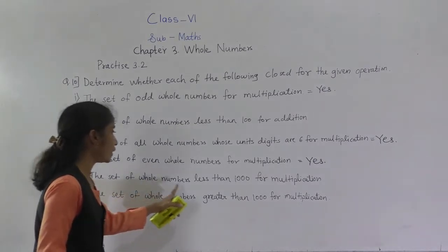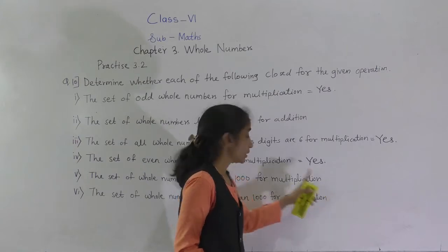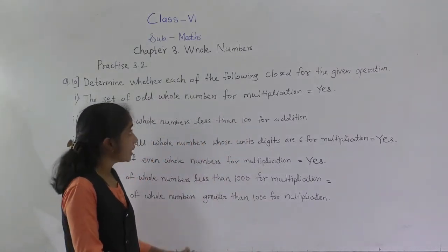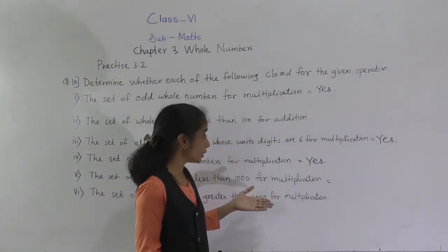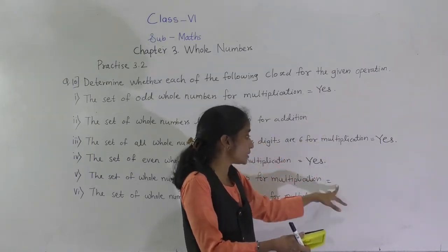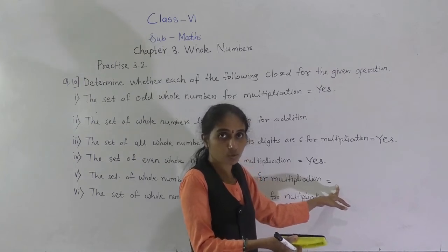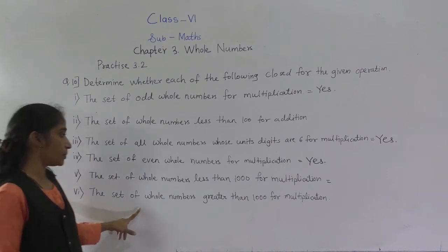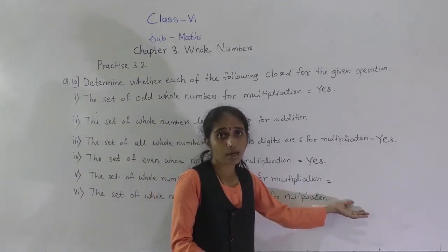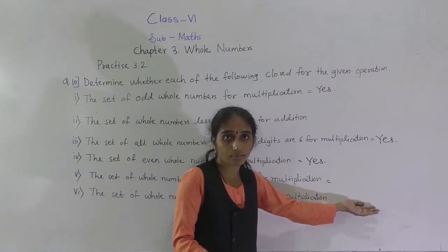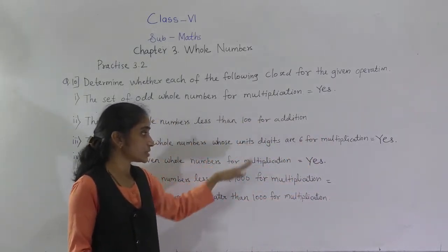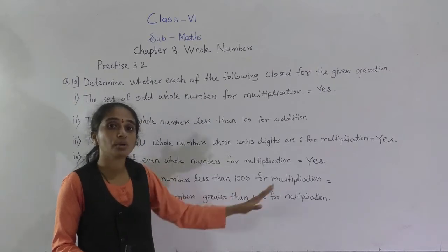Then, the set of whole numbers less than 1000 for multiplication. Any numbers less than 1000 that you multiply — you are going to get a whole number. So this is also closed for the given operation. Similarly, the set of whole numbers greater than 1000 for multiplication: any two numbers greater than 1000 you multiply, again you get a whole number. So that is also closed. I have shown three examples; you take your own examples and write the answer.